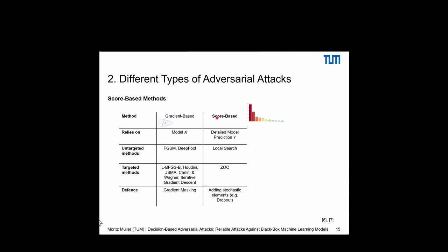Next are score-based attacks. They do not rely on model gradients, but need full knowledge of the confidence scores across all classes that the model produces for an input image. An untargeted example is local search. We can defend against score-based methods using stochastic elements during training, like dropout.